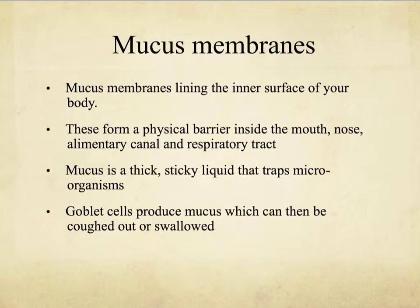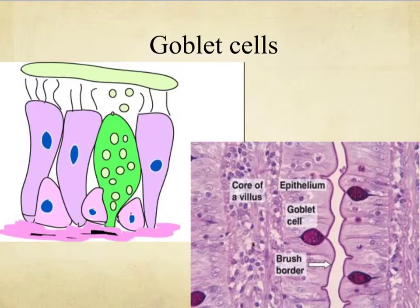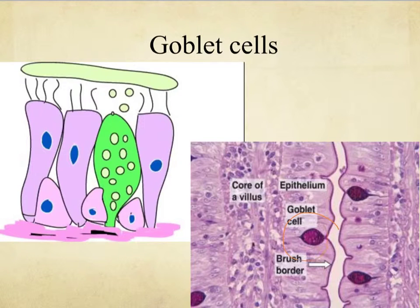Mucus membranes line the inner surface of your body and form a physical barrier inside your mouth, nose, alimentary canal, and respiratory tract. The mucus is thick and sticky, which means it traps microorganisms. The cells that produce mucus are called goblet cells. The mucus can then be coughed out or swallowed down into your digestive tract.